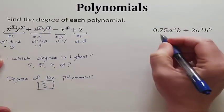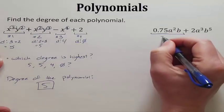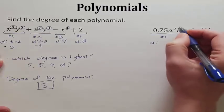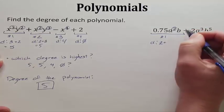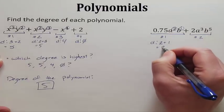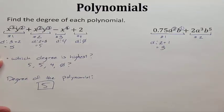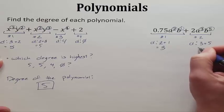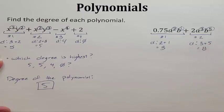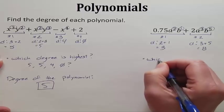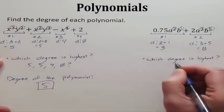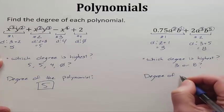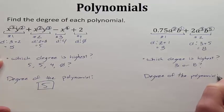Our last example: this polynomial has 2 monomials. Monomial 1 has degree 2 plus 1, so degree 3. Monomial 2 has degree 3 plus 5, which is 8. Comparing 3 and 8 — 8 is higher, so the degree of this polynomial is 8, and you're done.